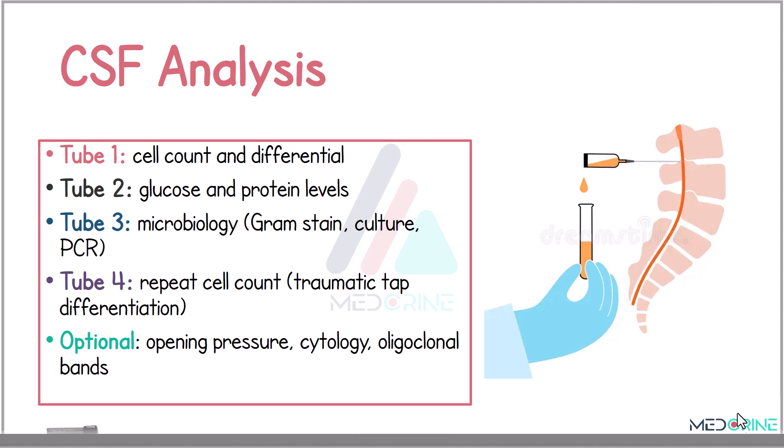Proceeding to the CSF analysis, cerebrospinal fluid is typically analyzed across four tubes. Tube one is for cell count. Tube two is for glucose and protein. Tube three is for microbiology studies, including Gram stain and culture, and tube four is for repeat cell count to rule out traumatic tap. Optional tests may include cytology, a PCR test, or oligoclonal band analysis depending on the clinical suspicion.